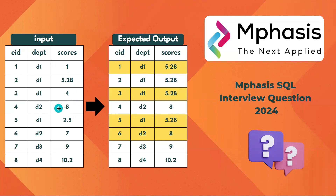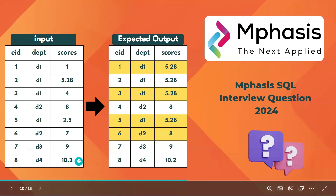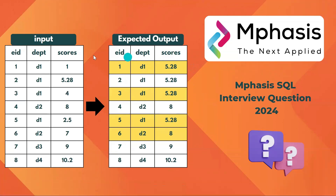Similarly for department two, we have two records — one with eight and one with seven — so seven should be updated to eight. For department three and department four, there is only one record each, so the maximum value remains the same.